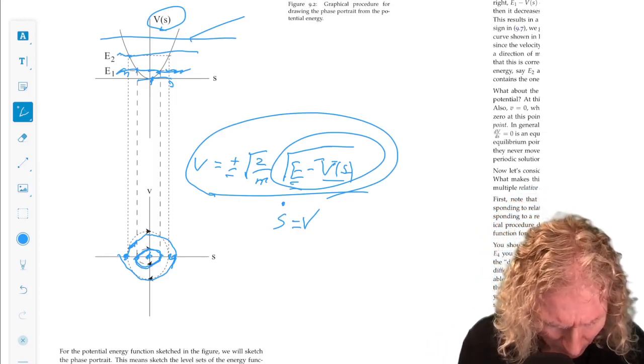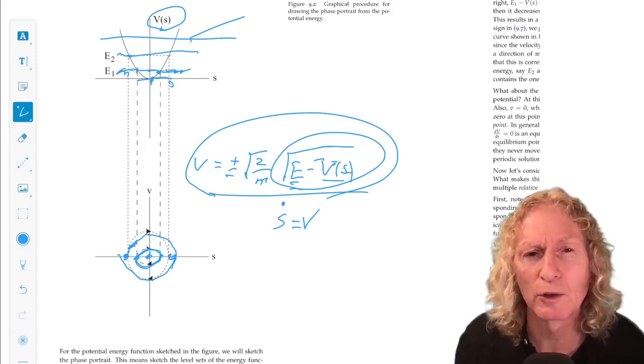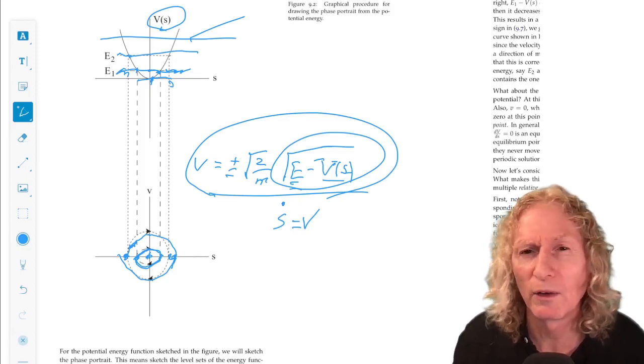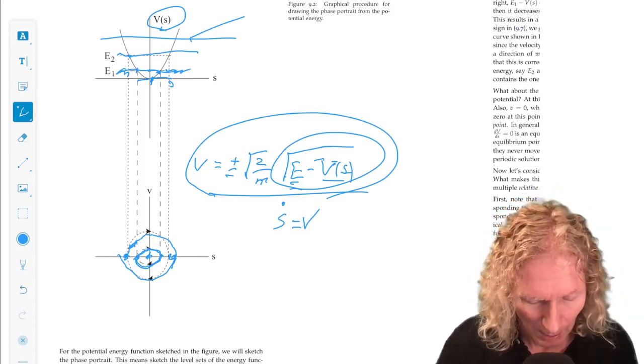Why? What does that mean? It means if we start near it, if we take an initial condition near it, we always stay close to it. We just oscillate around it.